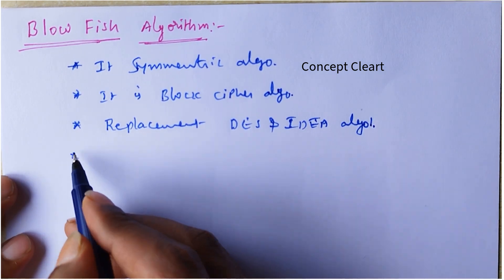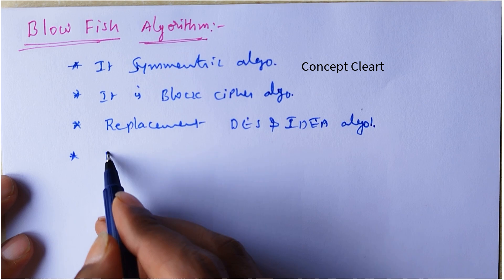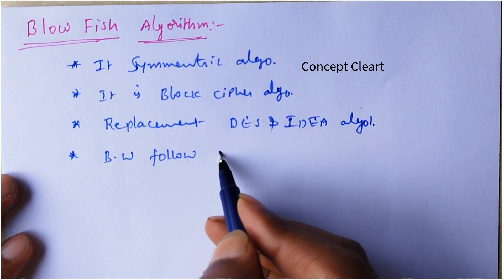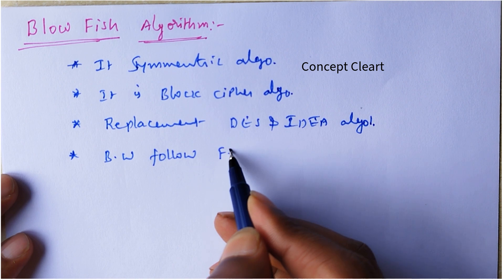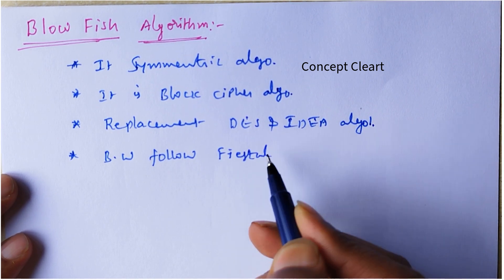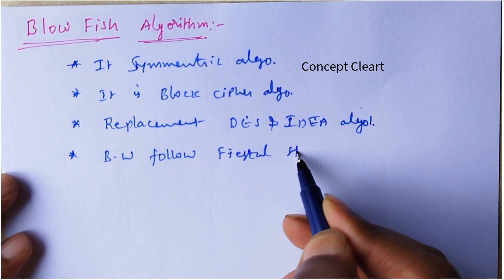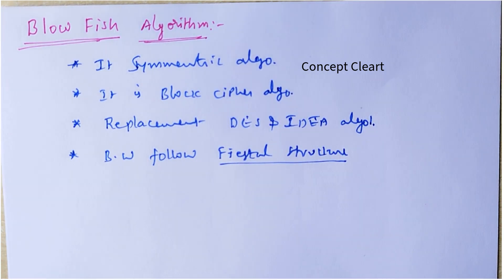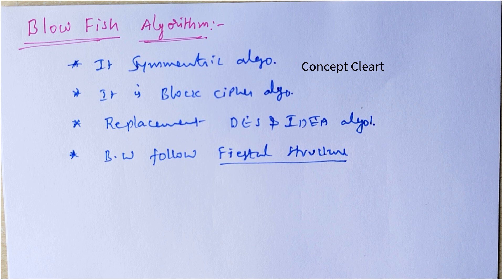Blowfish follows the Feistal structure. I already explained what is the Feistal structure in previous topics. In the Feistal structure, the plaintext is divided into a left side part and right side part. After performing operations, both will be swapped. That is the Feistal structure.